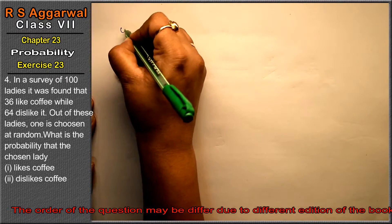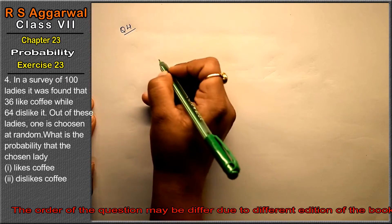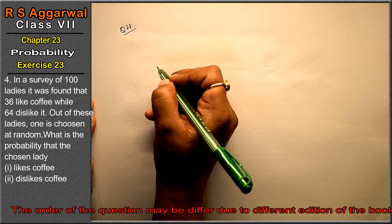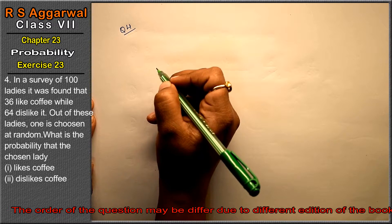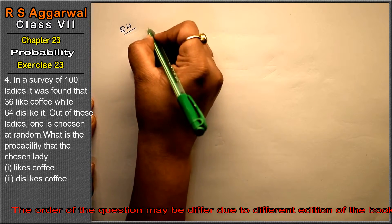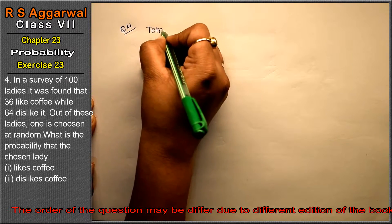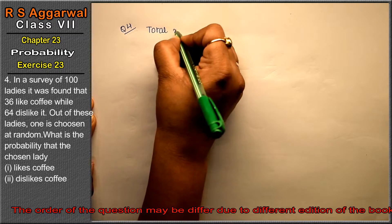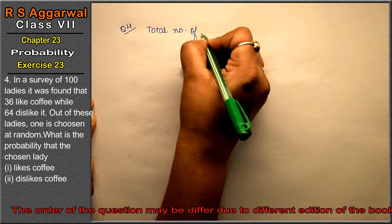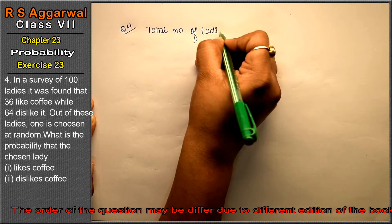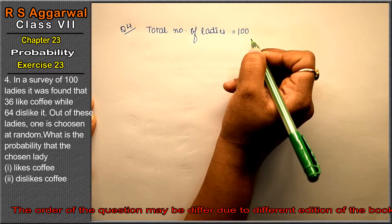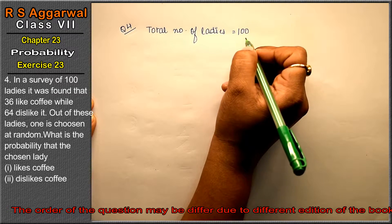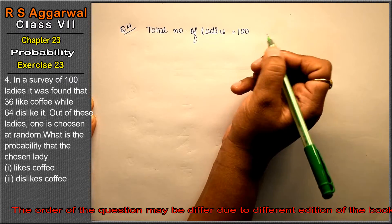Now let's do question number 4 of exercise 23, that is probability. Question number 4 is: in a survey of 100 ladies, it was found that 36 like coffee while 64 dislike it. Total number of ladies is 100.